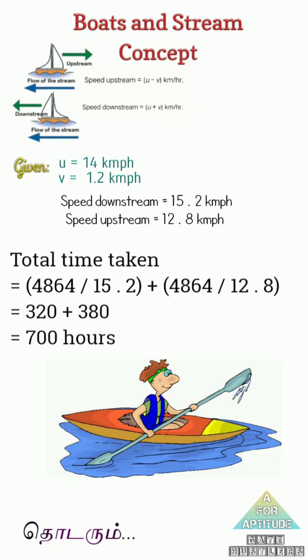So 320 hours along the direction. Speed is high, so time is low - 320 hours. But when you are against the stream, speed is low, so time is high. It is 380 hours. Total 700 hours. This is the first problem.